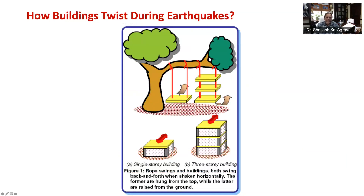A modified version can be seen nowadays in urban parks where a plastic cradle is tied with steel chains to a steel frame. If the rope swing is tied identically with two equal ropes, it swings equally when you sit in the middle of the cradle; otherwise, there will be twists. Buildings are also like these rope swings. In fact, they are inverted swings — buildings are attached at the ground whereas strings are attached from the top. The vertical walls and columns of the buildings are like ropes, and floors are like cradles. As the swing vibrates through an external push, similarly buildings vibrate back and forth on account of ground shaking due to an earthquake.